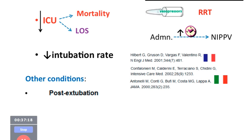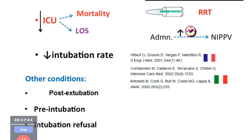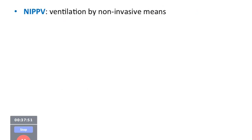Other indications for NIV include post-extubation support — for patients extubated after pulmonary edema or heart failure who may risk re-deterioration. NIV can also be used pre-intubation to recruit alveoli and pre-oxygenate effectively before intubation. For patients at end of life who decline intubation, a trial of NIV can be offered as a ceiling of care.